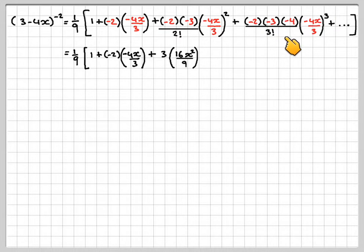-2×-3×-4 divided by 3! will be 4. And then you're going to have -64x³/27 when you cube this.